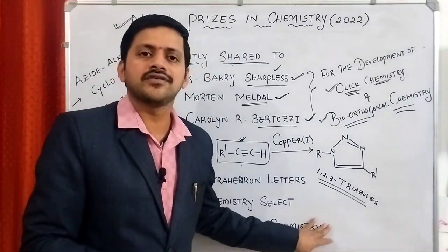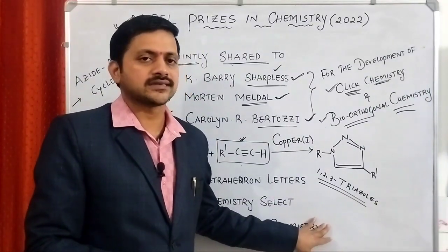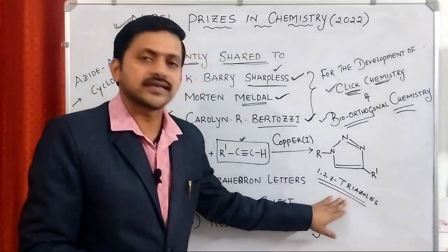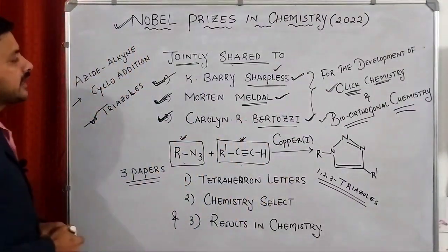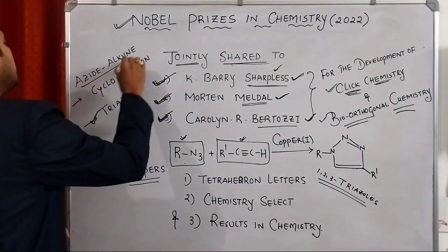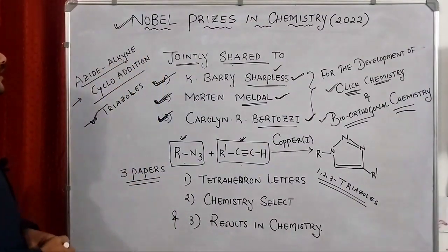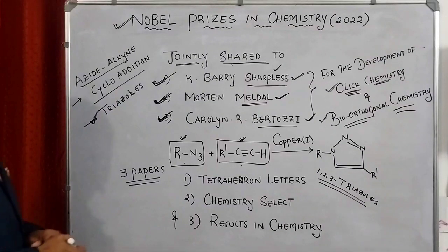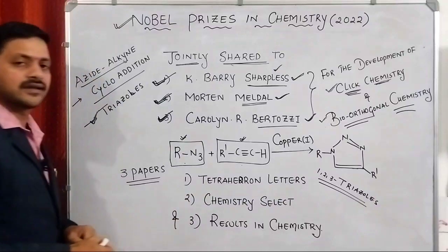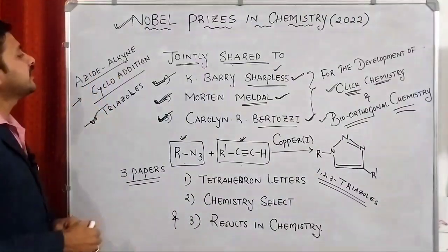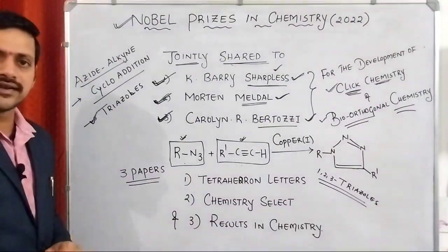That's why nowadays everyone is using this click chemistry approach to synthesize these molecules. In order to synthesize the particular triazole moiety, we are using an addition reaction called azide alkyne cycloaddition reaction. Because the reactants are azides and alkynes. That's why people are saying azide alkyne cycloaddition.